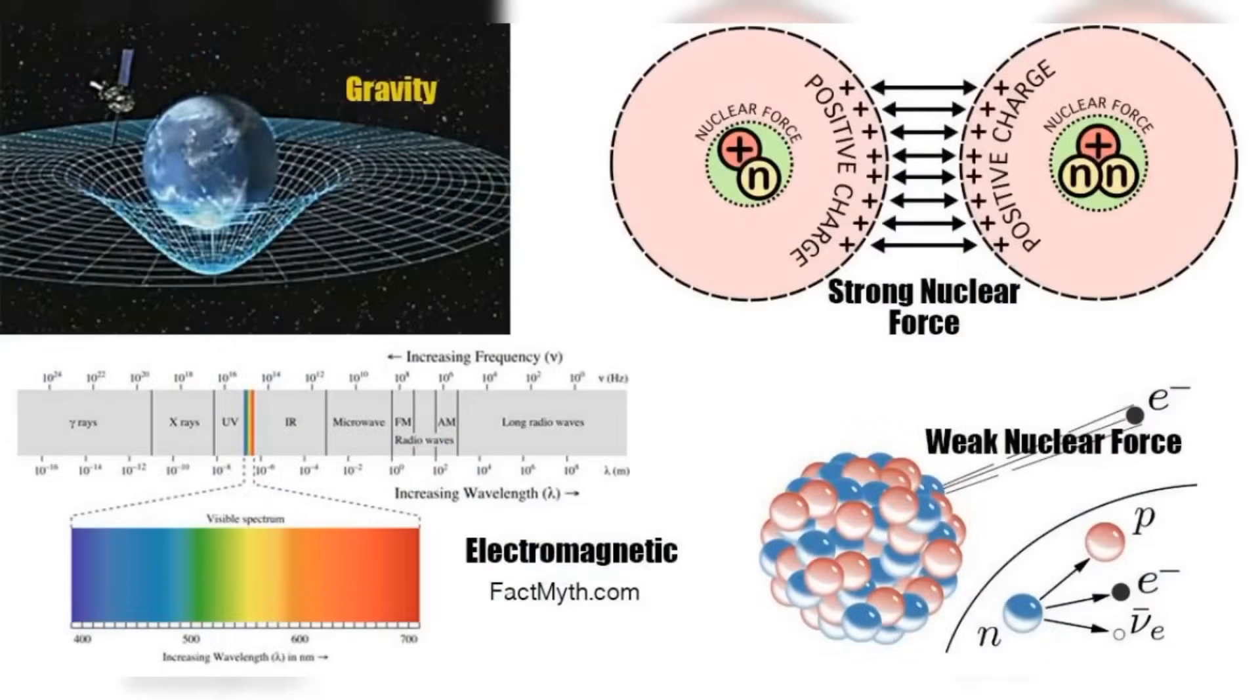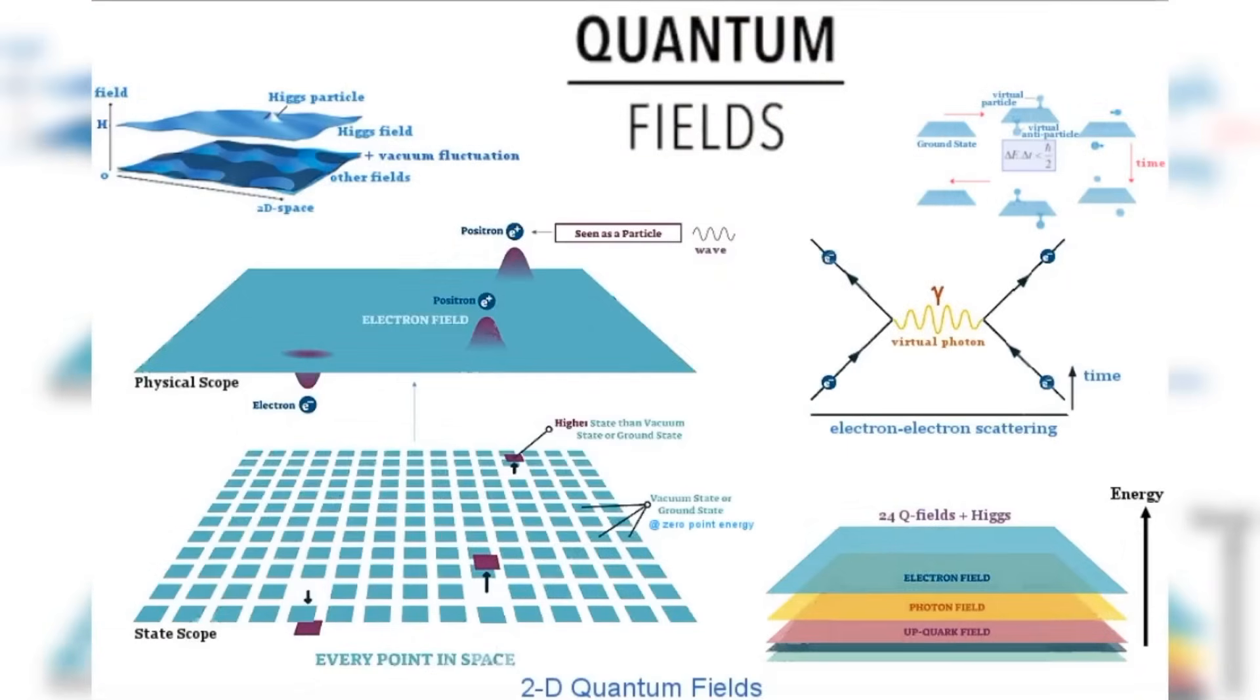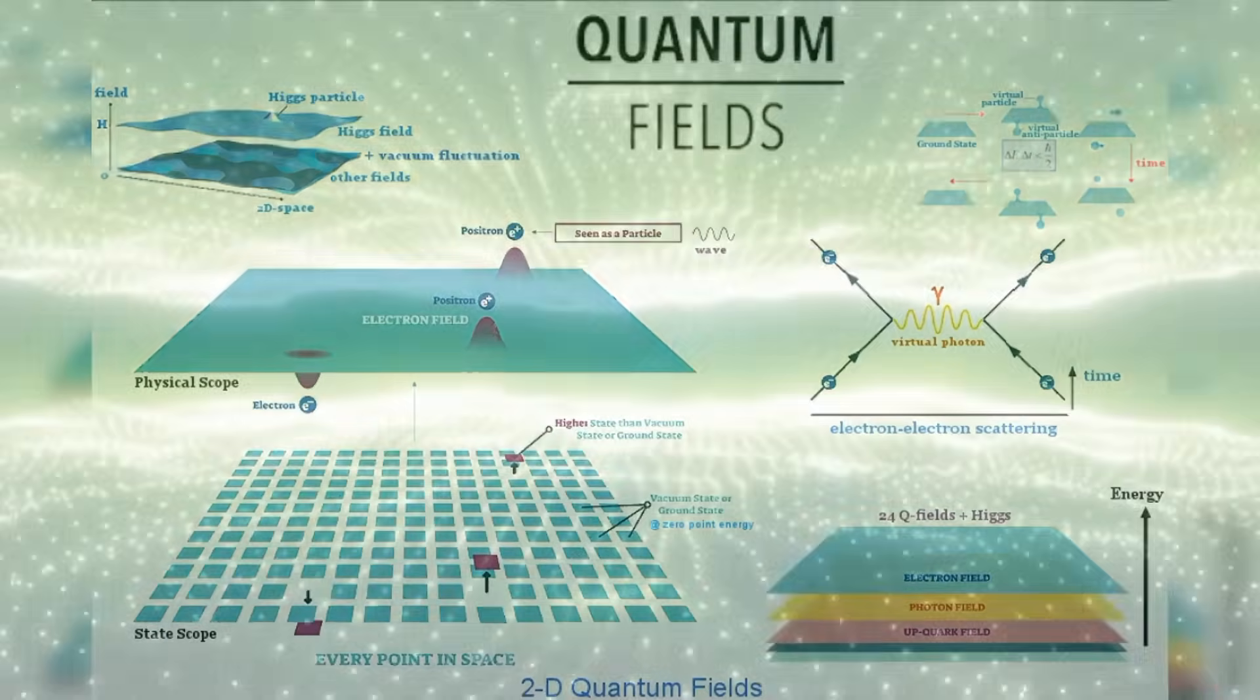and the challenges posed by alternative approaches. Quantum field theory stands as one of the most successful frameworks in theoretical physics, providing a robust description of three out of the four fundamental forces: electromagnetism, weak nuclear force, and strong nuclear force. At its core, QFT treats particles as excitations of underlying fields that pervade spacetime. These fields, such as the electromagnetic field or the quark field, are quantized according to the principles of quantum mechanics, giving rise to particles as quanta of these fields.